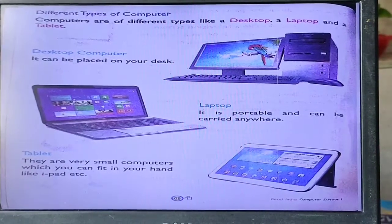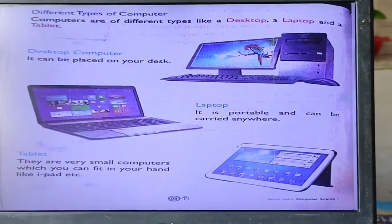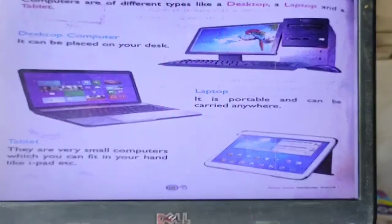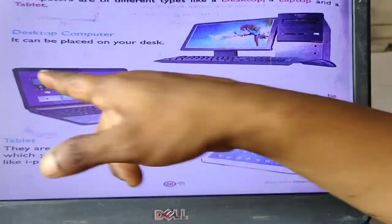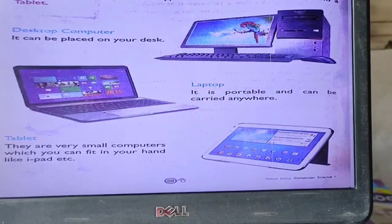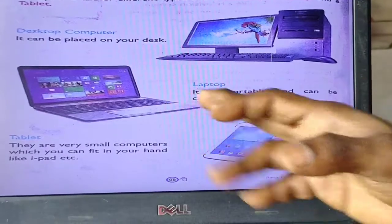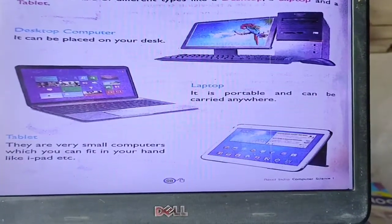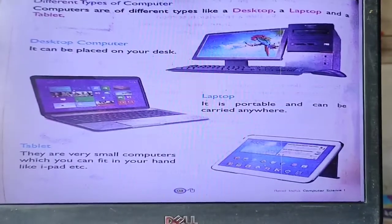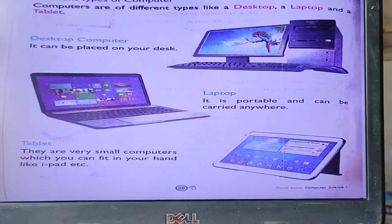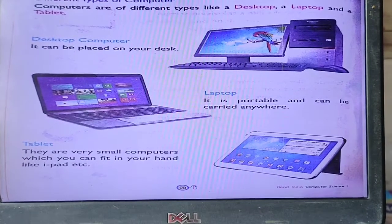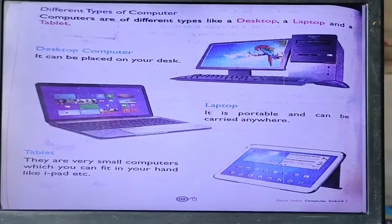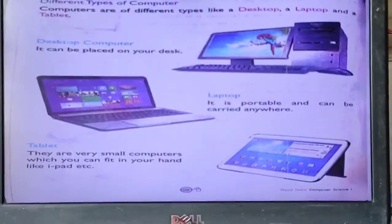Now we will study different types of computer. Computer ek tarah ka nahi, kai tariqe se hota hai. Computers are of different types like desktop, laptop, and tablet. Desktop joh haam desk ke upar rakhke use karte hain. Laptop is portable and can be carried anywhere — hum ise apne bag mein rakhke kahin bhi le ja sakte hain. Tablet: they are very small computers which you can fit in your hand, like an iPod — aap apne pocket mein ya hand mein bhi le jaake saath mein kar sakte ho.